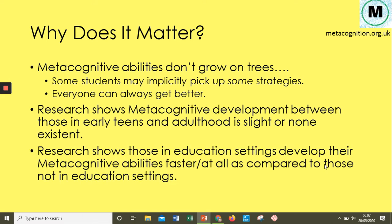These next two points are really significant. Research finds that if you take a 12 or 13-year-old teenager and compare them to an early or older adult, the difference in metacognitive ability is either very slight or non-existent. So if we don't explicitly teach metacognition and its strategies, by the time you get a teenager, their metacognitive abilities will peak — they're not going to get any better.